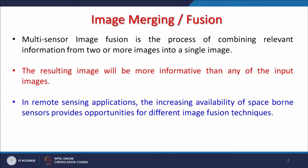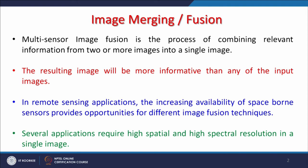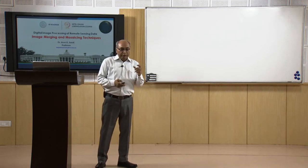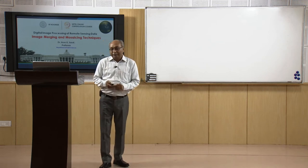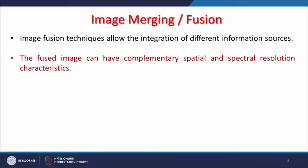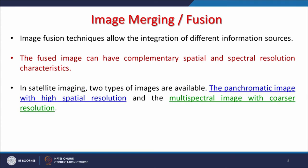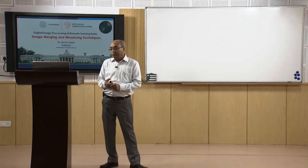In remote sensing applications, the increasing availability of spaceborne sensors and images provides opportunities for different image fusion techniques. Several applications require high spatial and high spectral resolution in a single image, and these two together may not be available, but if we know how to merge them we can create such a product. Image fusion techniques allow the integration of different information sources, and the fused image can have complementary spatial and spectral resolution characteristics.